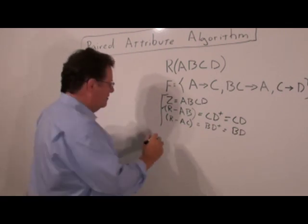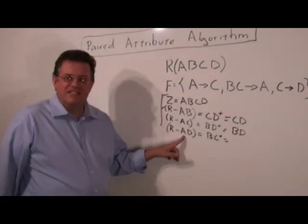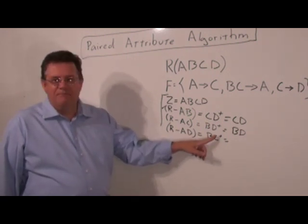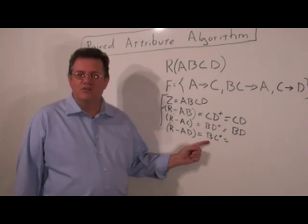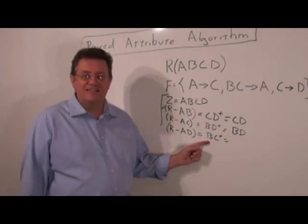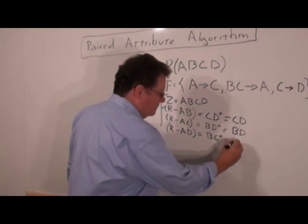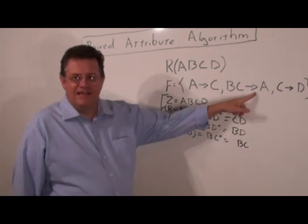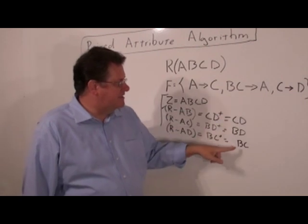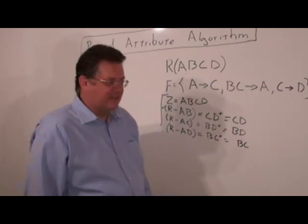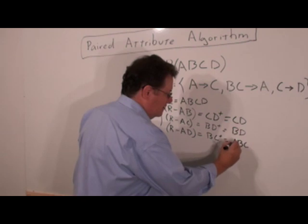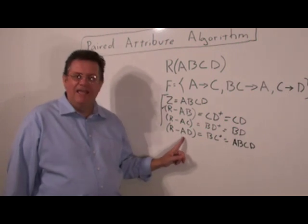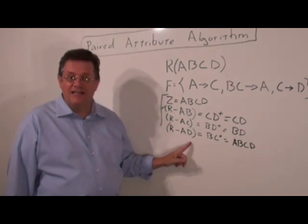We take the next pair, which is AD. So R minus AD is BC. We take BC closure. We know by reflexivity it's going to be at least the B and the C. BC functionally determines A, so we can add an A. And C functionally determines D, so we're going to get everything. So BC closure contains both the A and the D, and so we do have a violation at this point.